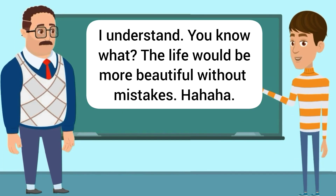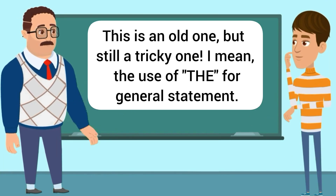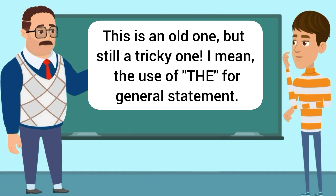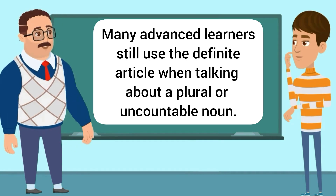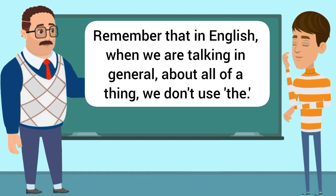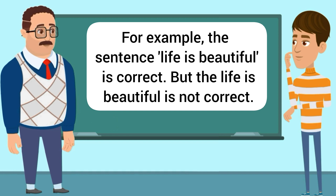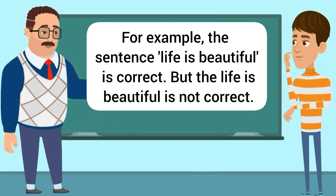I understand. You know what? The life would be more beautiful without mistakes. This is an old one, but still a tricky one — the use of 'the' for a general statement. Many advanced learners still use the definite article when talking about a plural or uncountable noun. Remember that in English, when we are talking in general about all of a thing, we don't use 'the.' For example, 'life is beautiful' is correct, but 'the life is beautiful' is not correct.